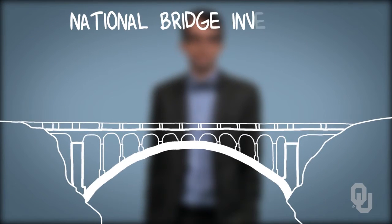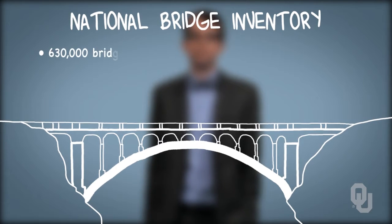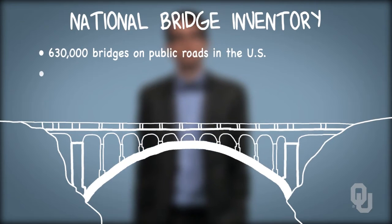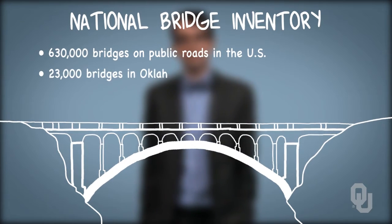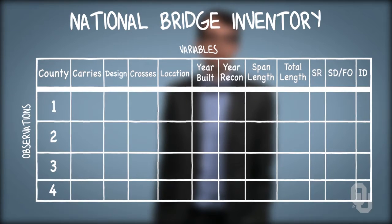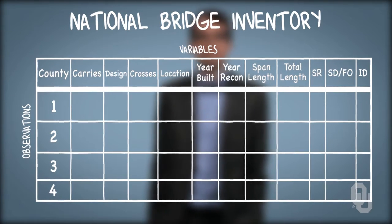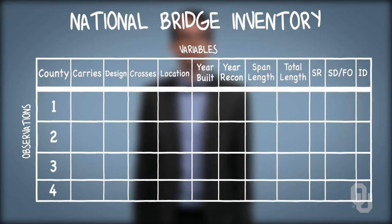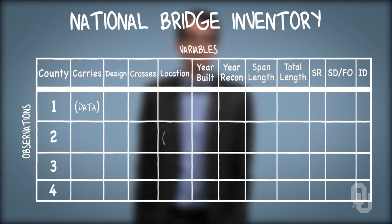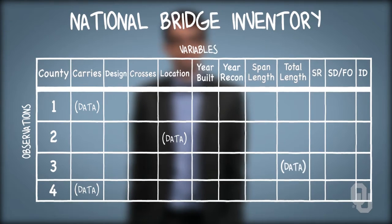Let's take a look at a dataset from the National Bridge Inventory from 2013, which contains information describing over 630,000 bridges on public roads in the United States. Shown is a subset of the more than 23,000 bridges found in Oklahoma. Let's distinguish the variables running across the top from the observations — each row represents one bridge observation. We generally refer to the actual values of the variables for each observation as data, found at all intersections of columns and rows.